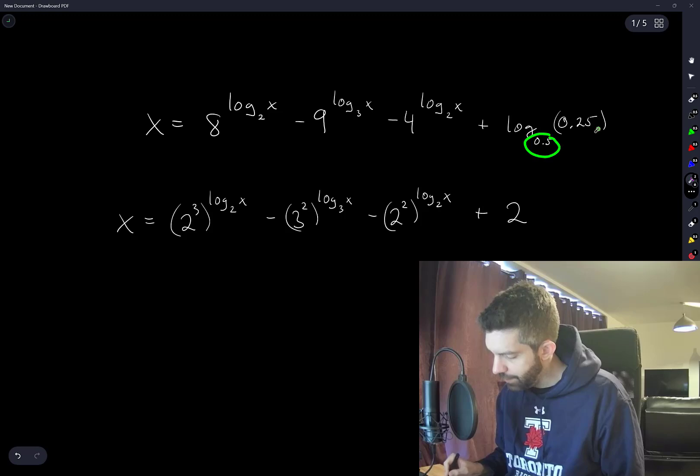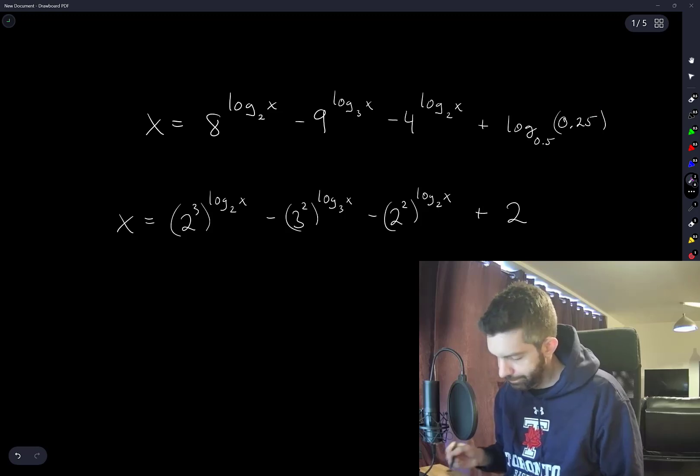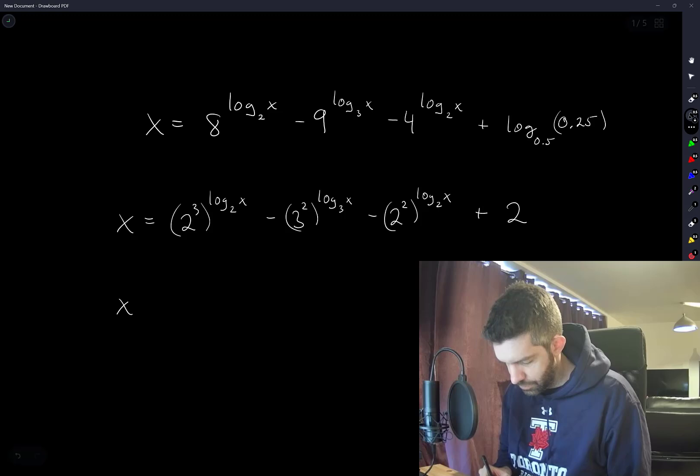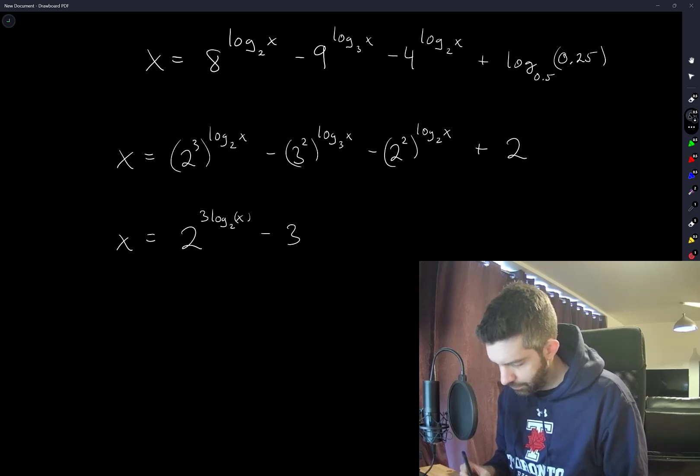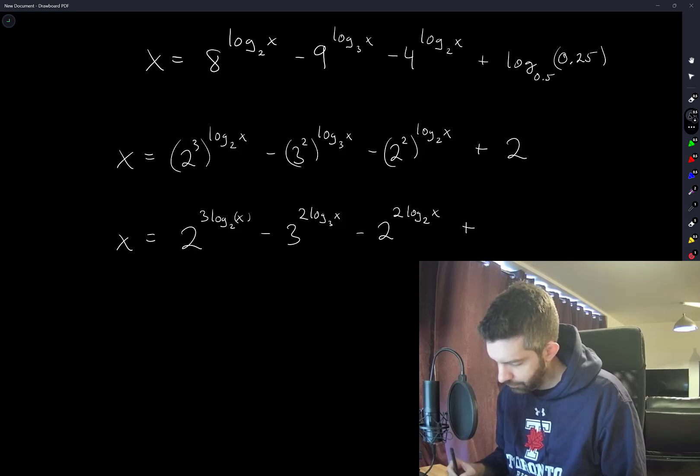0.5 squared is equal to 0.25. So yeah, this is how logarithms work. So now we should be able to simplify some other things here using some rules of exponents. This is 2 to the power of 3 log base 2 of x minus 3 to the power of 2 log base 3 of x minus 2 to the power of 2 log base 2 of x plus 2.